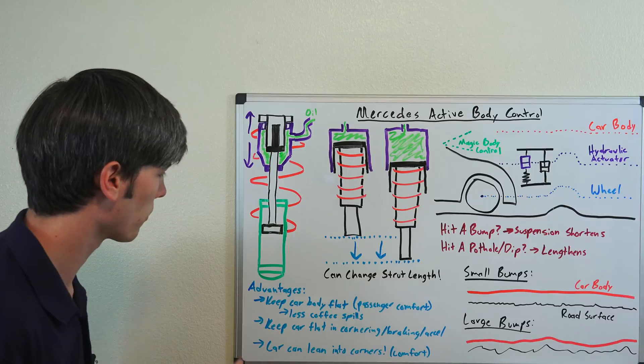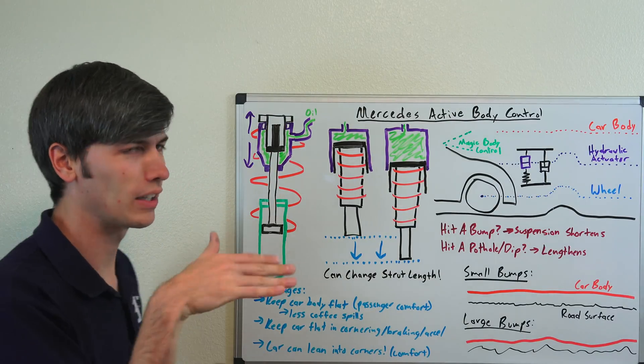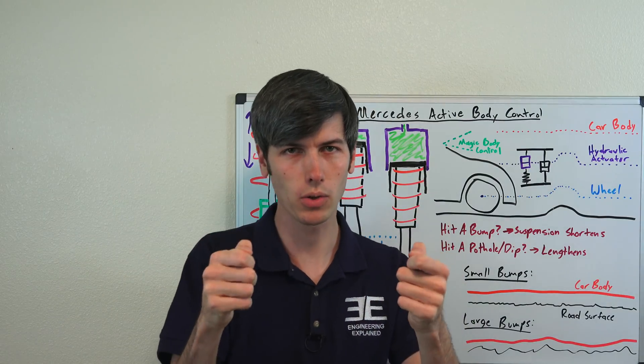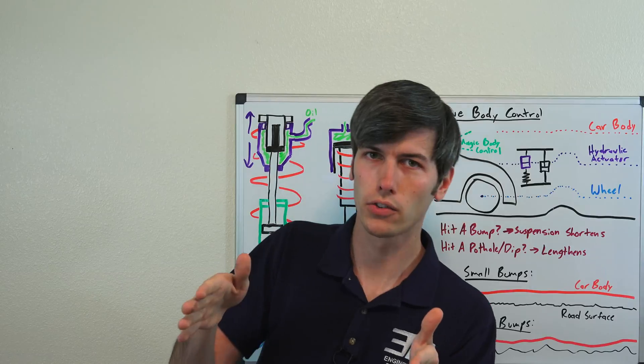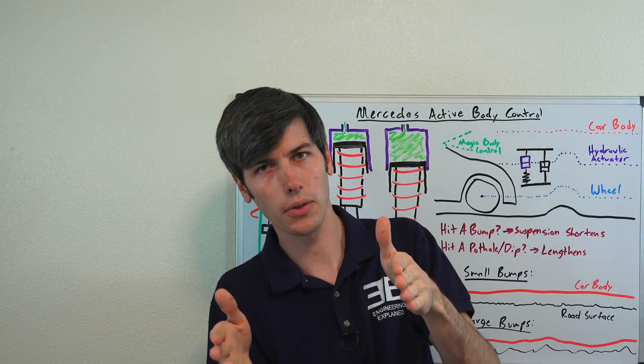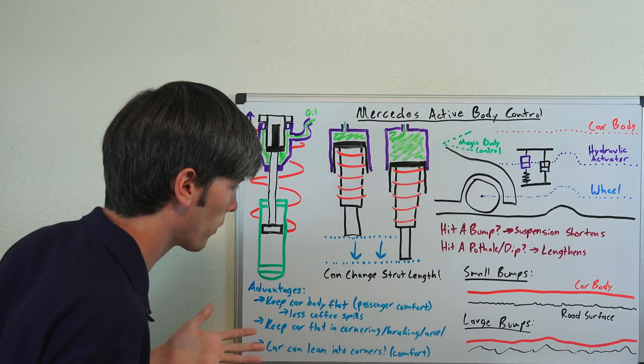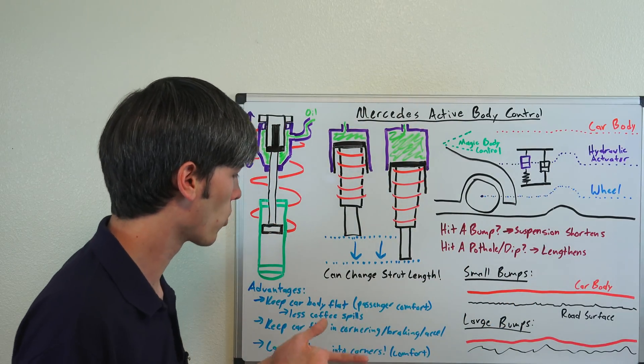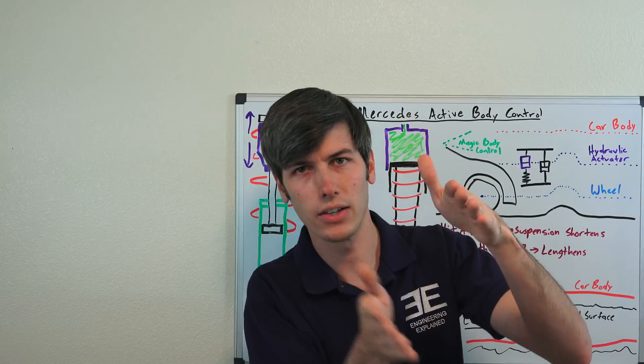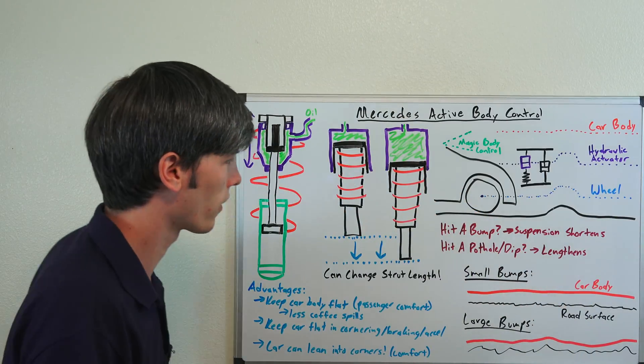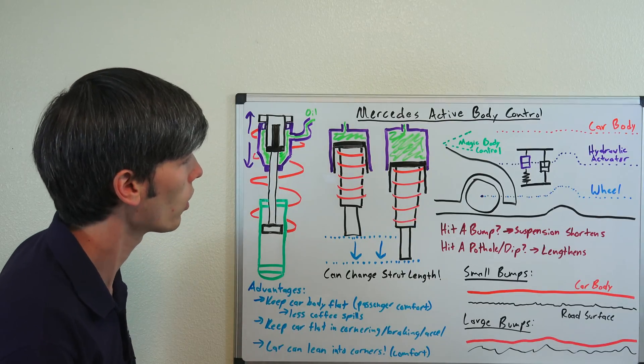Really cool that you can compensate for all kinds of body roll with this system. One thing they've talked about doing is have the car lean into corners kind of like a motorcycle. If you're taking a right-hand turn on a motorcycle, you're going to lean into that corner, but in a car the car is going to roll out. What this system can do is tilt the car into that corner. They say that this is just for comfort, it's not for performance. It's not going to let you corner faster, but it's going to hug you better in that corner because you're not flopping to the outside. You're kind of having that g-force go down into the seat rather than to the outside of the car.